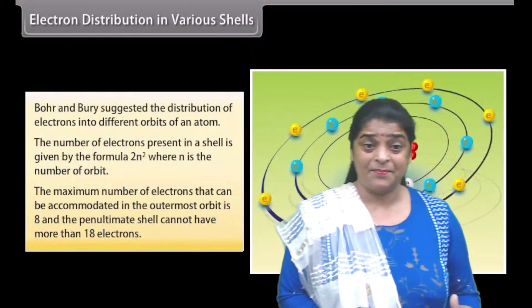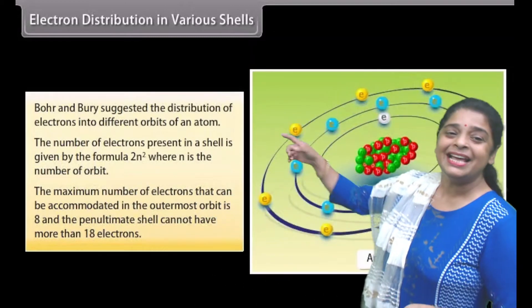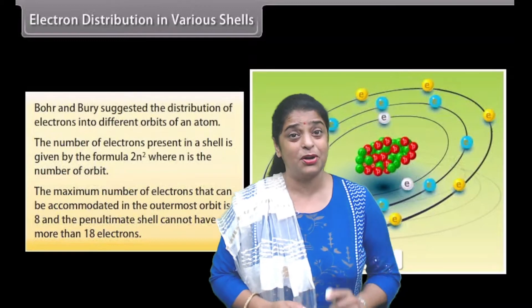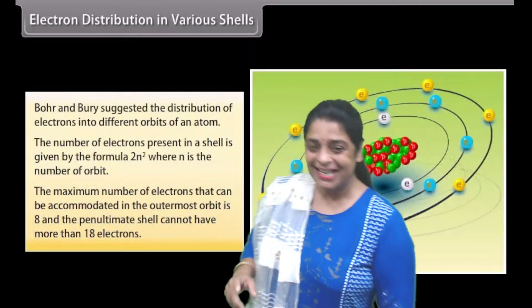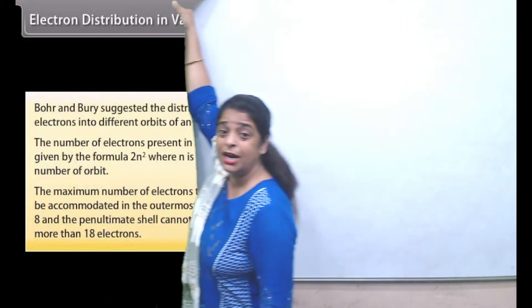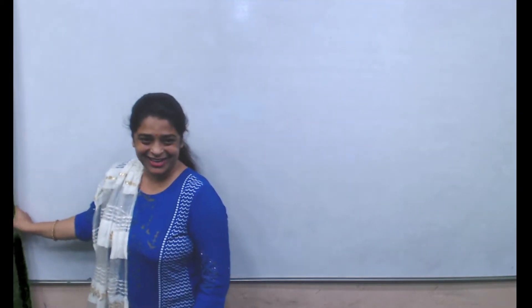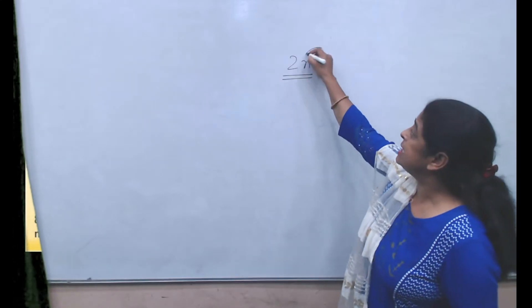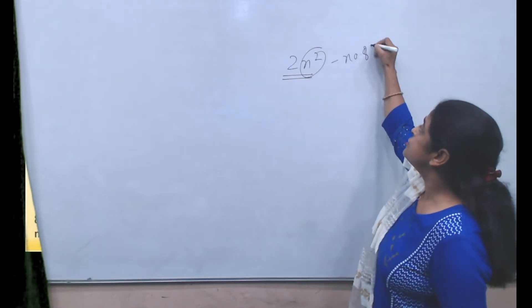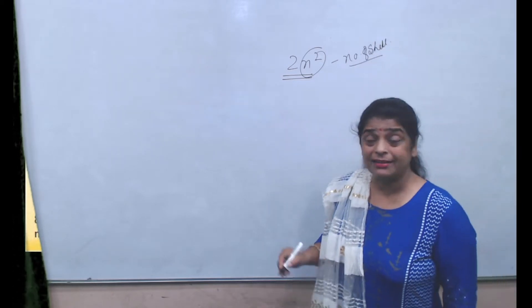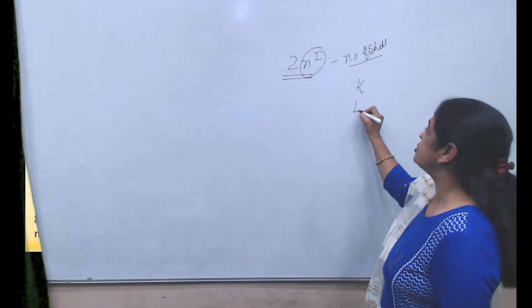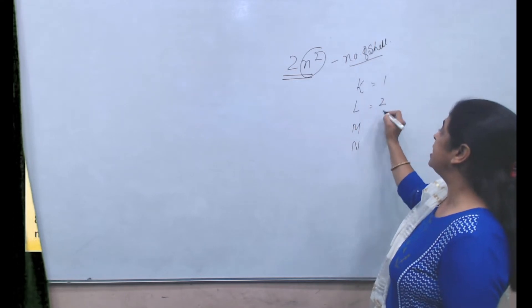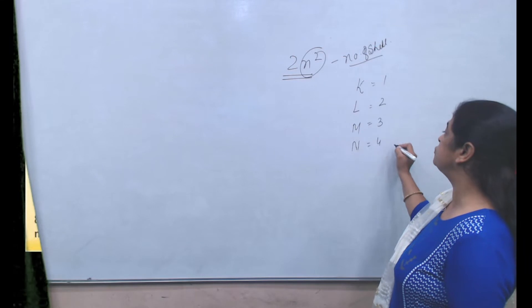How do we decide this? This can be decided by the 2n² rule. Let's move to the whiteboard to discuss the 2n² rule. What does the 2n² rule mean? n is the number of the shell. The shells are K, L, M, and N shells, and we can name them as K=1, L=2, M=3, N=4, and so on.